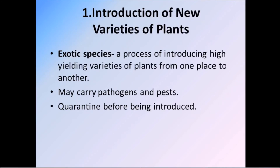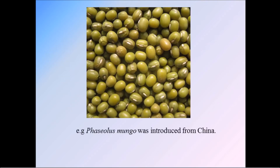Exotic species: this is the process of introducing high-yielding varieties of plants from one place to another — such plants are called exotic species. These imported plant materials may contain pathogens and pests, so they have to be tested and quarantined before being introduced into the fields. Example: Phaseolus mungo was introduced from China and was quarantined before introducing to the fields.